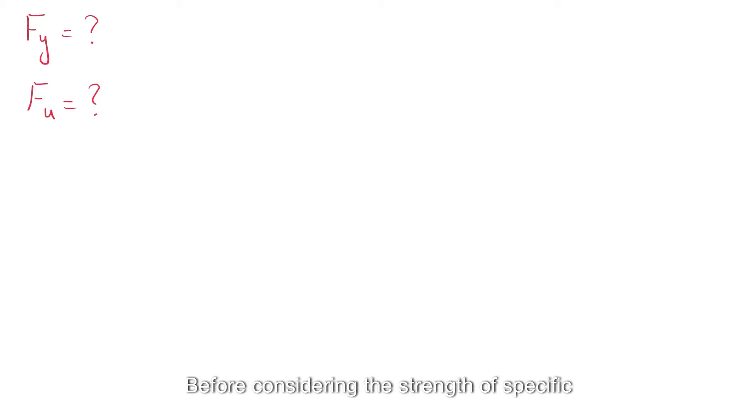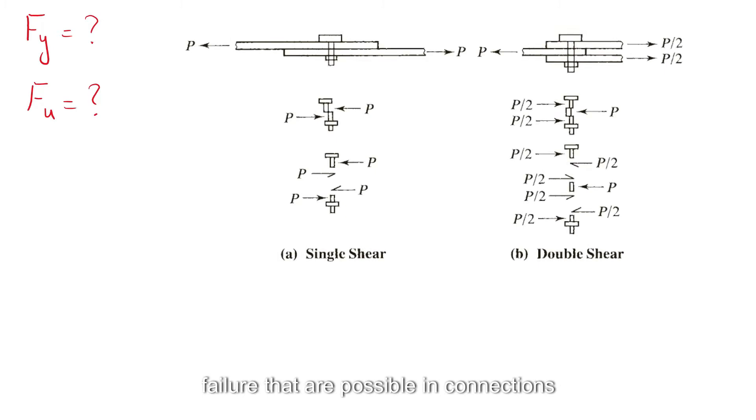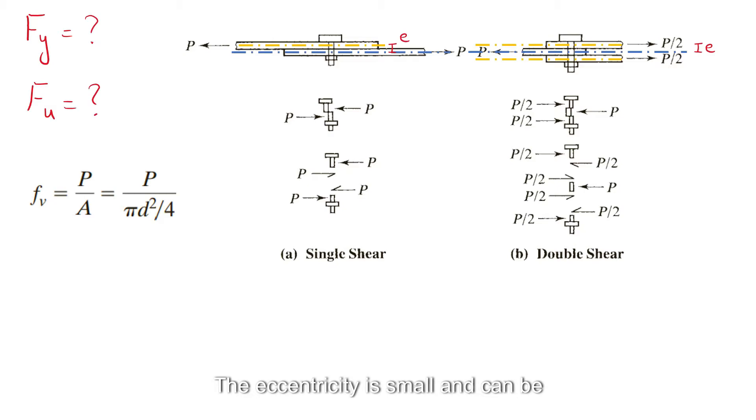Before considering the strength of specific grades of bolts, we need to examine the various modes of failure that are possible in connections with fasteners subjected to shear. There are two broad categories of failure: failure of the fastener and failure of the parts being connected. Failure of the fastener can be assumed to occur as shown. The average shearing stress in this case will be the force P divided by the shear area of the bolt. Although the loading in this case is not perfectly concentric, the eccentricity is small and can be neglected.